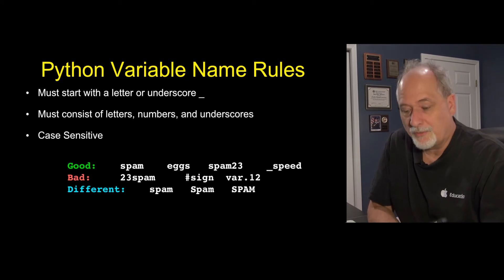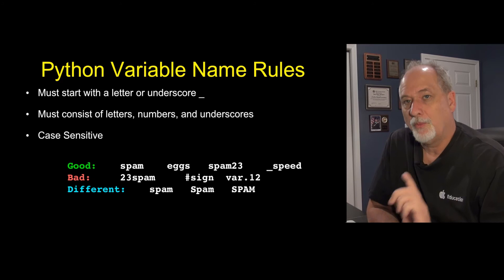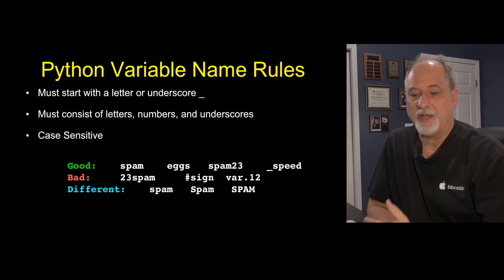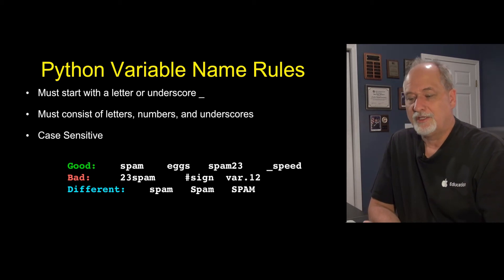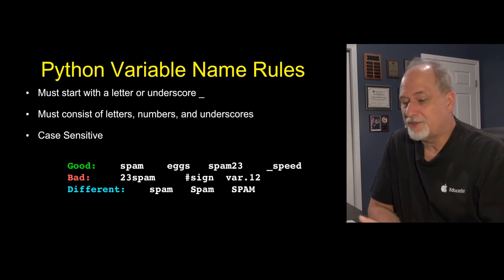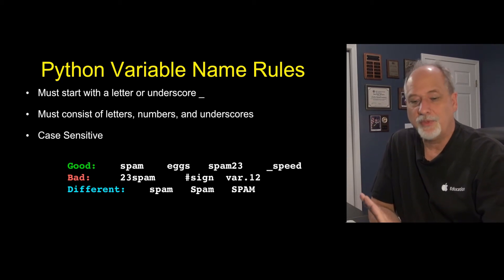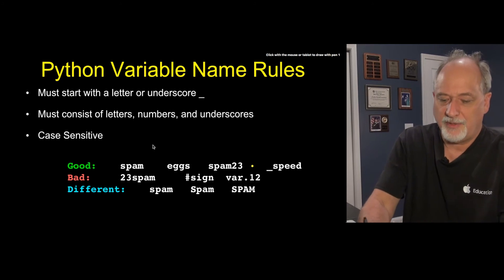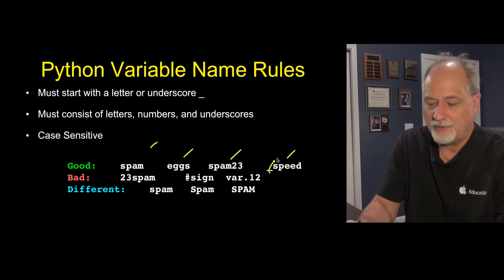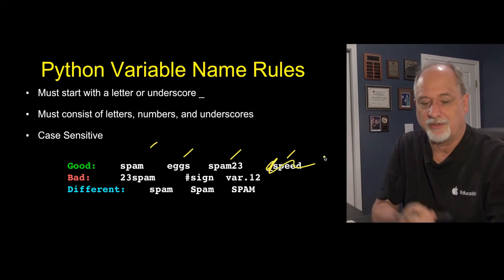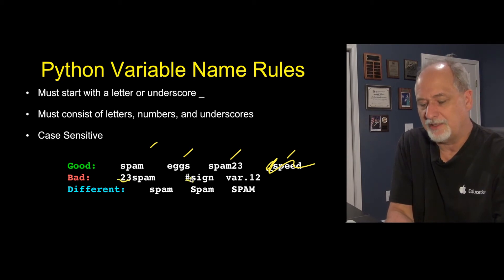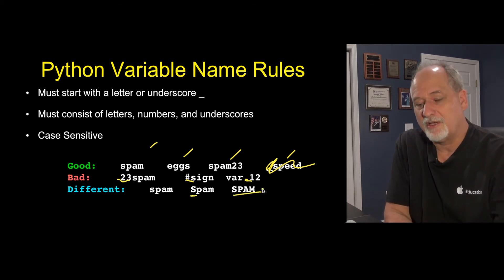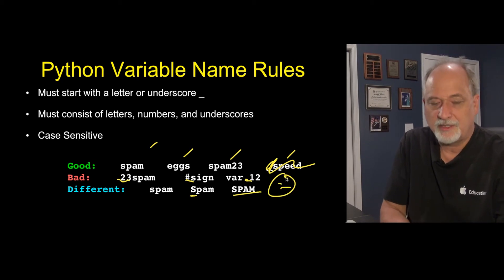There are some rules for making variable names. You can start with a letter or an underscore, though we tend to reserve underscores as the first character for variables used to communicate with Python itself. You can have letters, numbers, and underscores after the first character. They're case sensitive, but it's a bad idea to use case as the only differentiator. So spam, eggs, spam23, and _speed are all totally legitimate. 23spam starts with a number, pound sign and dot are not legitimate variable characters. spam, Spam, and SPAM are different, but you don't want to depend on that too much.